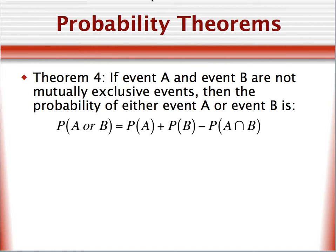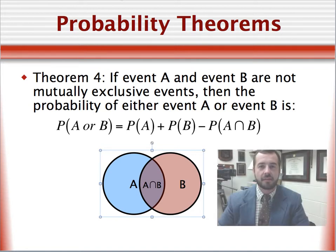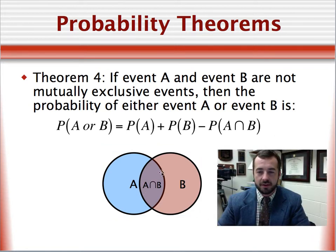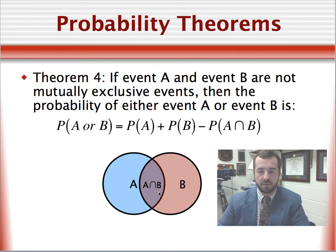Theorem four states that if event A and event B are not mutually exclusive events, then the probability of either event A or event B, or both, is given by the addition of the probability of A, plus probability of B, minus the probability of both occurring. Events that are not mutually exclusive have some common events in common, as illustrated by this Venn diagram. Here we have the probability of an event A, probability of an event B, and in this section, this represents the probability of both occurring.